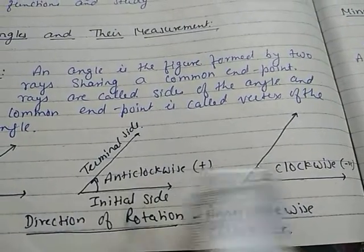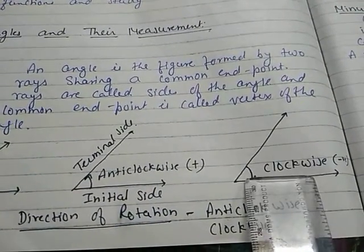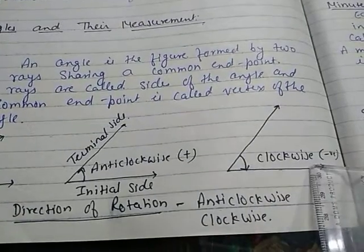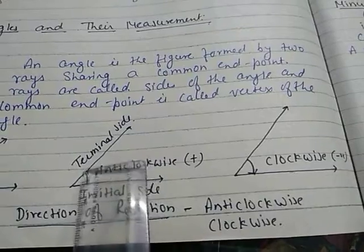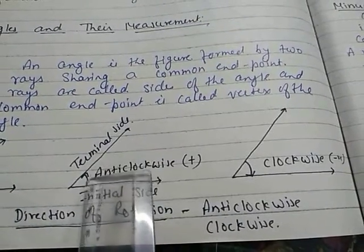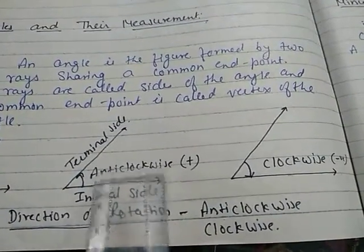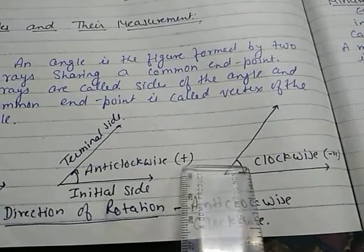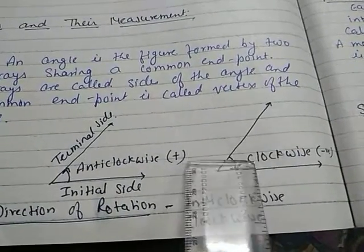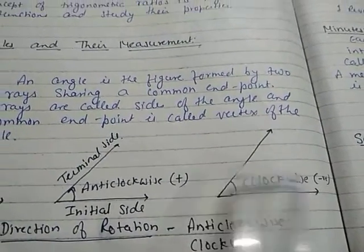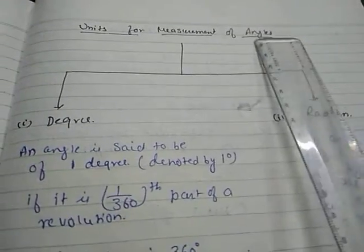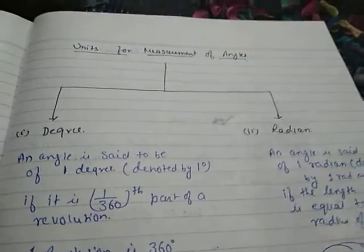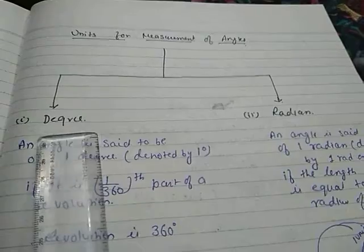The rotation can be anticlockwise direction or clockwise direction. Anticlockwise direction is considered as a positive angle, and clockwise direction is considered as a negative angle. That means if the direction of rotation is anticlockwise, the angle formed is +θ, and if clockwise, the angle formed is −θ. Now we have to study the units for measurement of angle.